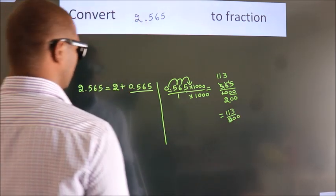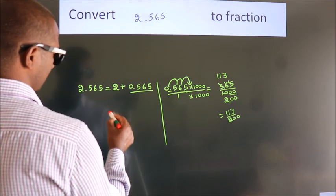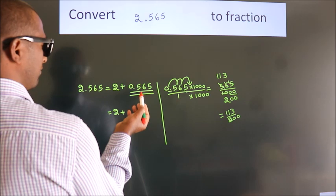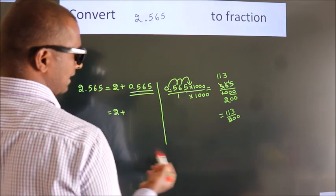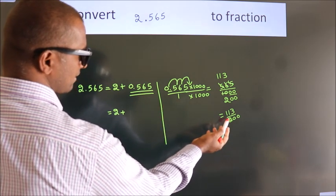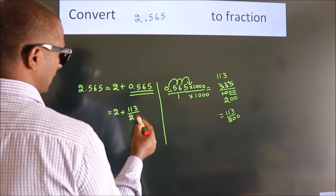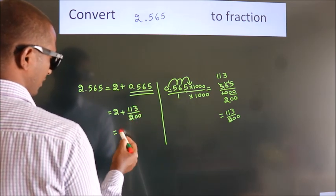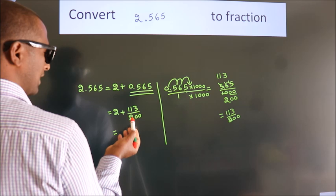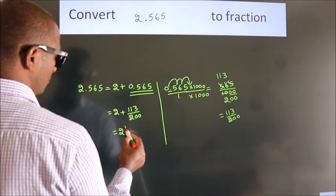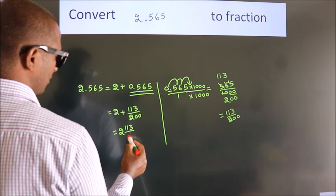Now here, 2 plus in place of 0.565, now we write this fraction 113 by 200. 2 plus 113 by 200. In mixed fraction it is 2 and 113 over 200.